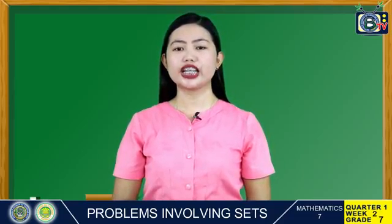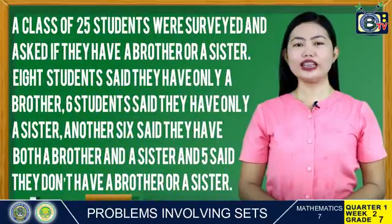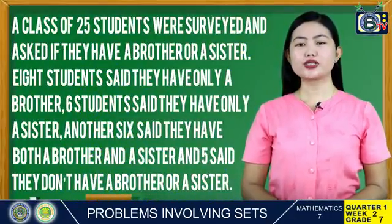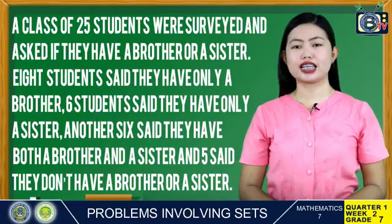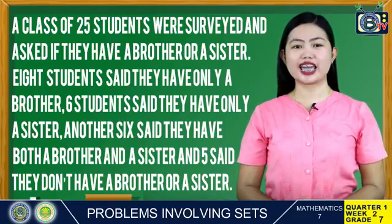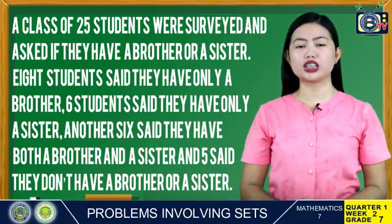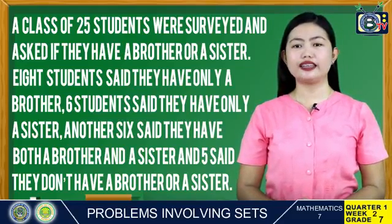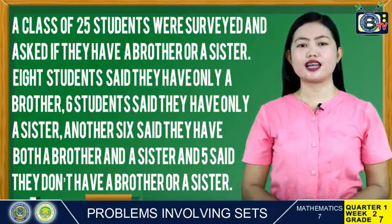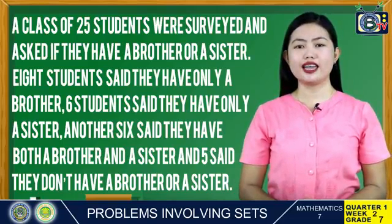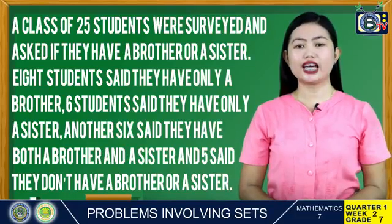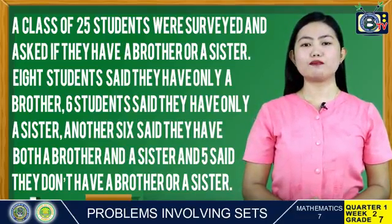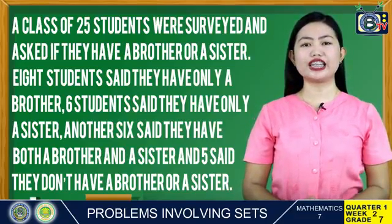There are many simple real-life problems that can be solved applying the concepts of Venn diagrams. Let us consider this situation: a class of 25 students were surveyed and asked if they have a brother or a sister. Eight students said they have only a brother, six students said they have only a sister, another six said they have both a brother and a sister, and five said they don't have a brother or a sister.